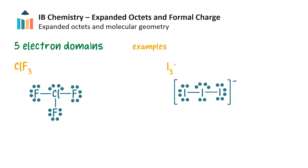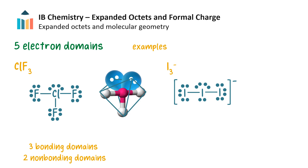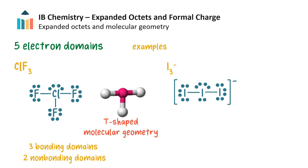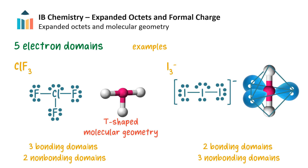Here are another two compounds with 5 electron domains. Chlorine trifluoride has 3 bonding domains and 2 lone pairs on the central atom. It has a trigonal bipyramidal electron domain geometry because it has 5 electron domains, but a T-shaped molecular geometry, which is easier to see if we remove the lone pairs. The I3⁻ ion has 3 lone pairs on the central atom and only 2 single bonds. Because of the 5 electron domains on the central atom, this results in a trigonal bipyramidal electron domain geometry, with the 3 lone pairs spread equally in the equatorial plane and the bonds sticking out in the axial plane.